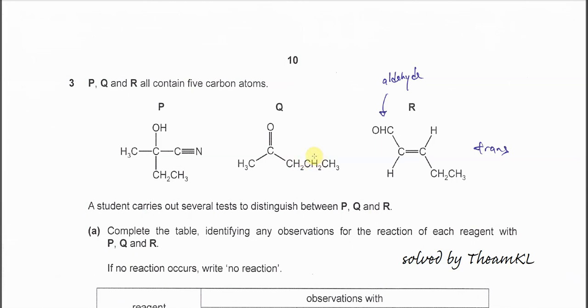Question 3. We have P, Q, and R in this question. P has two functional groups: hydroxy and nitrile. Q has a carbonyl, and R also has a carbonyl. The Q carbonyl is for the ketone, and this R carbonyl is the aldehyde.